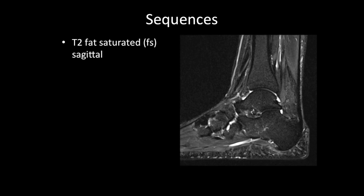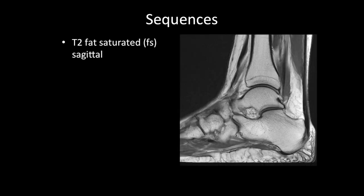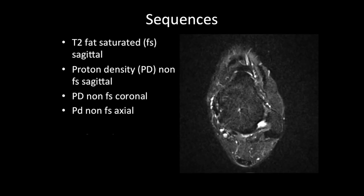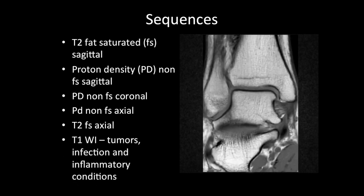The sequences for a routine ankle MRI consist of T2 fat saturated sagittal images, proton density non-fat saturated images in all three planes, and T2 fat saturated axial images. T1-weighted images are not obtained as part of routine ankle MRI done for internal derangements or sports injuries, but T1-weighted images are required for imaging in tumors, infection, and inflammatory conditions.